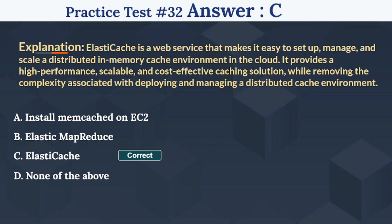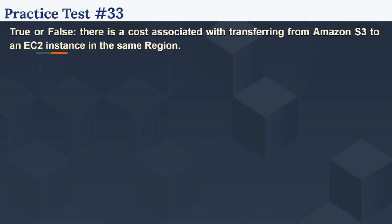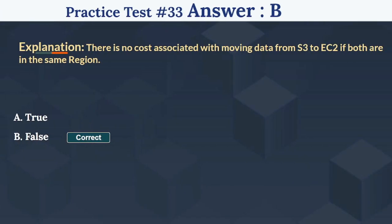So the 33rd question is: True or false? There is a cost associated with transferring data from Amazon S3 to an EC2 instance in the same region. The options are: Option A True, Option B False. The right answer is B, False. There is no cost associated with moving data from S3 to EC2 if both are in the same region.